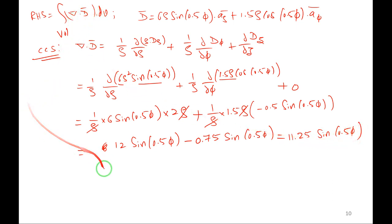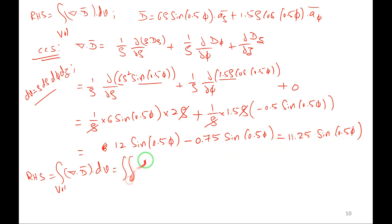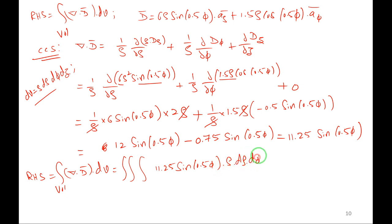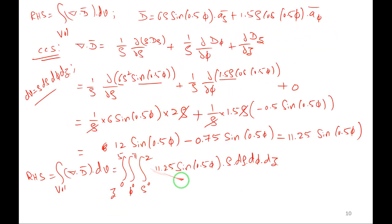The differential volume in cylindrical coordinates is dV = ρ·dρ·dφ·dz. RHS = triple integral of 11.25·sin(0.5φ)·ρ·dρ·dφ·dz, with ρ from 0 to 2, φ from 0 to π, z from 0 to 5.